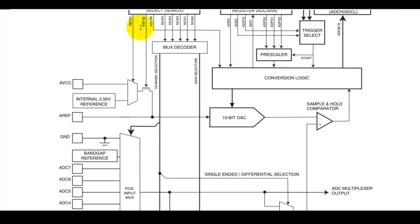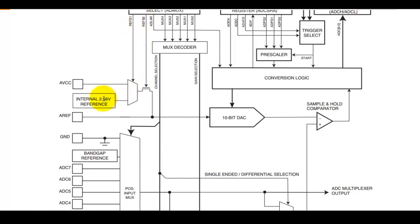Setting bits 0,1 means the analog VCC will be selected as the reference to the ADC block. If you select 1,1 — both bits set to 1 — the internal 2.56 volt reference will be selected and the internal capacitor will be enabled.